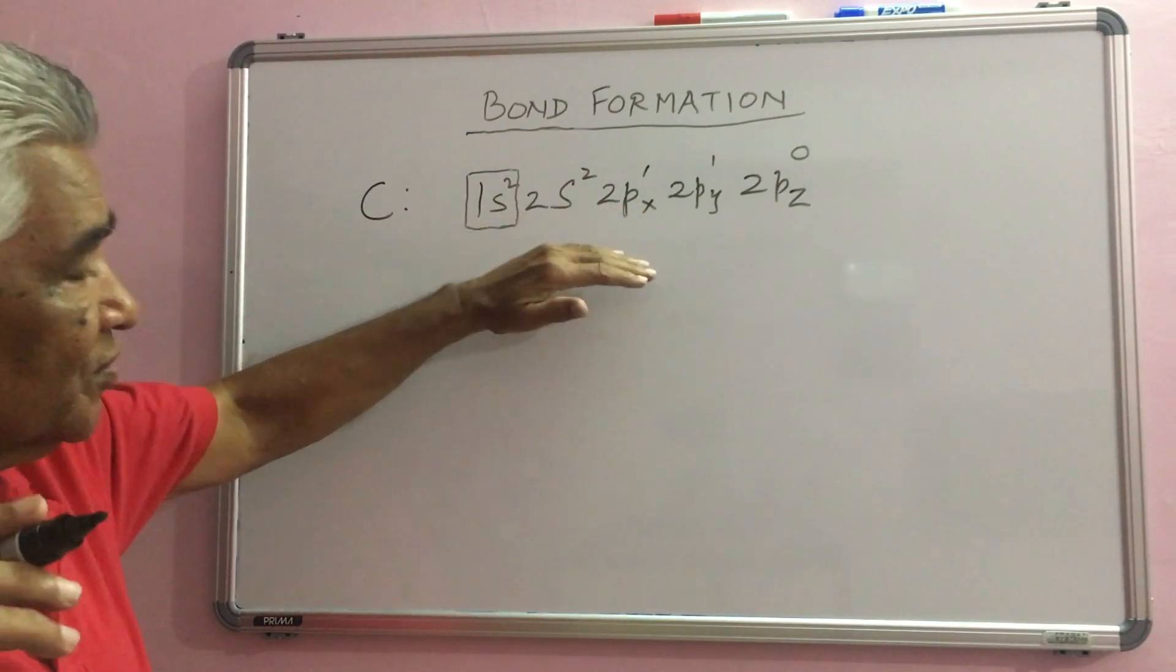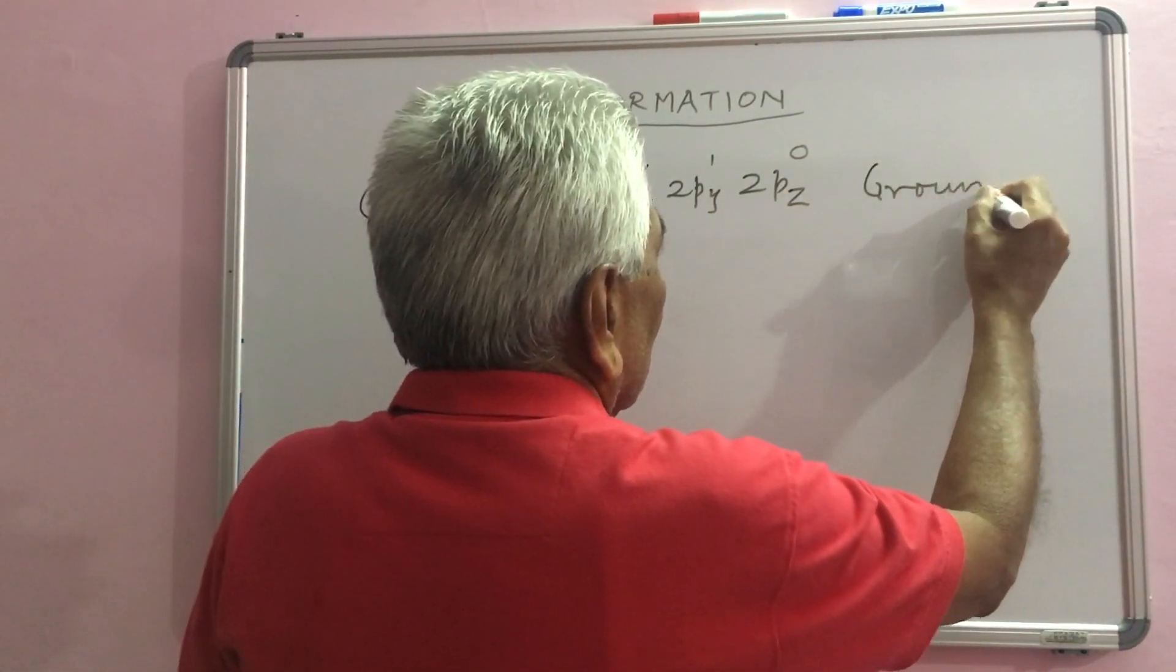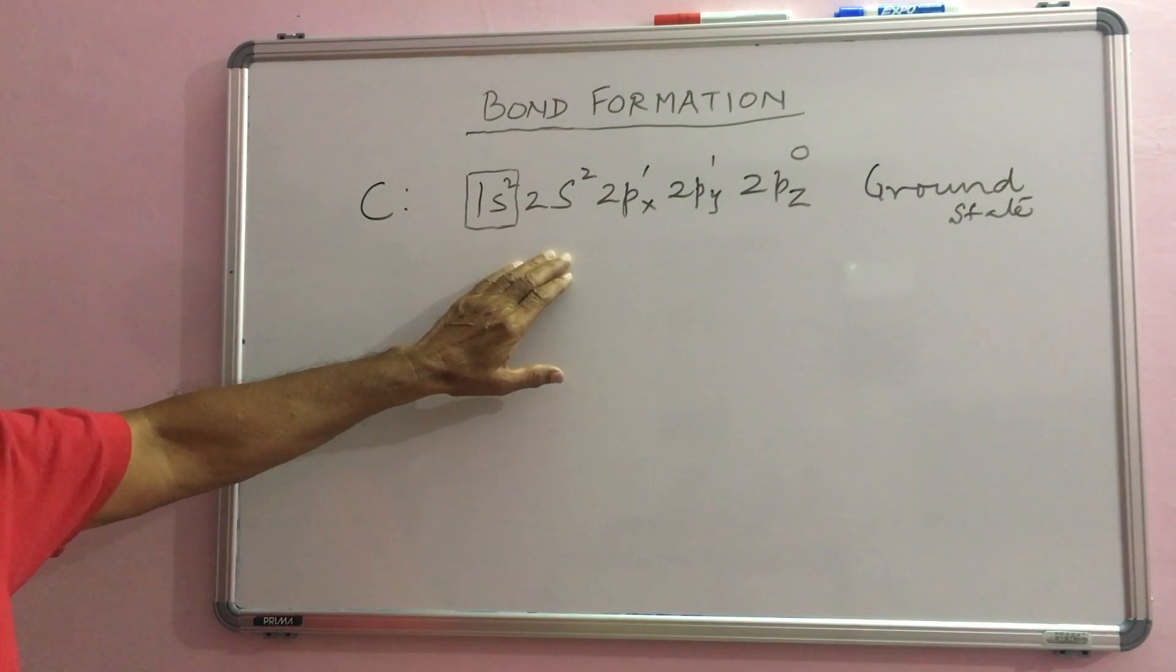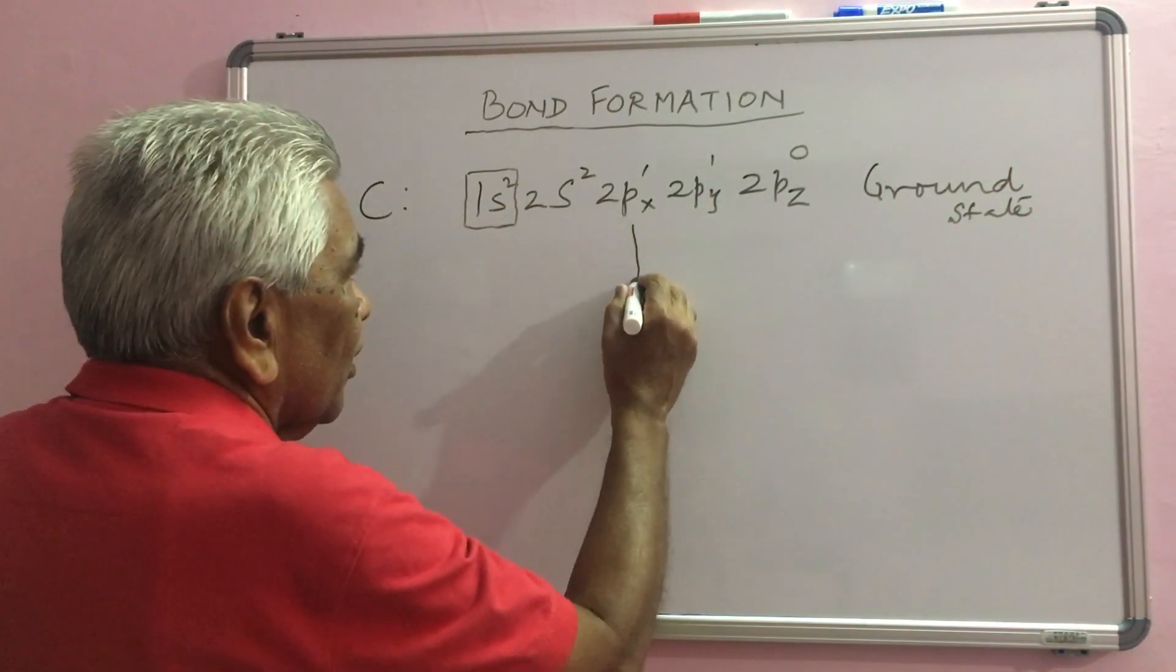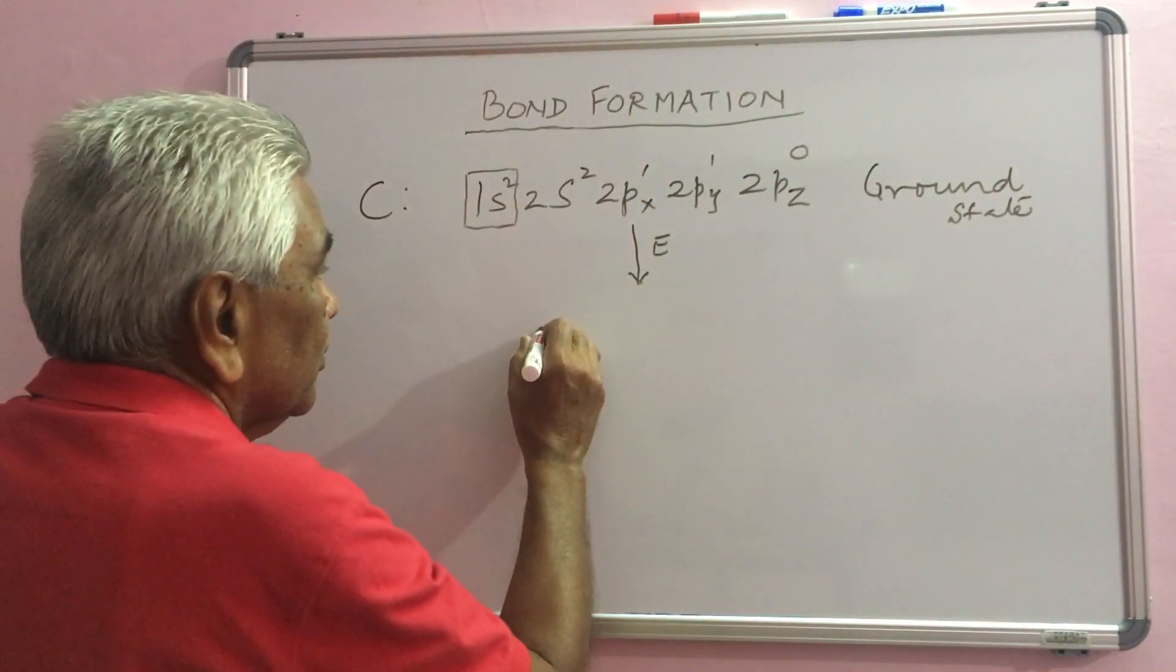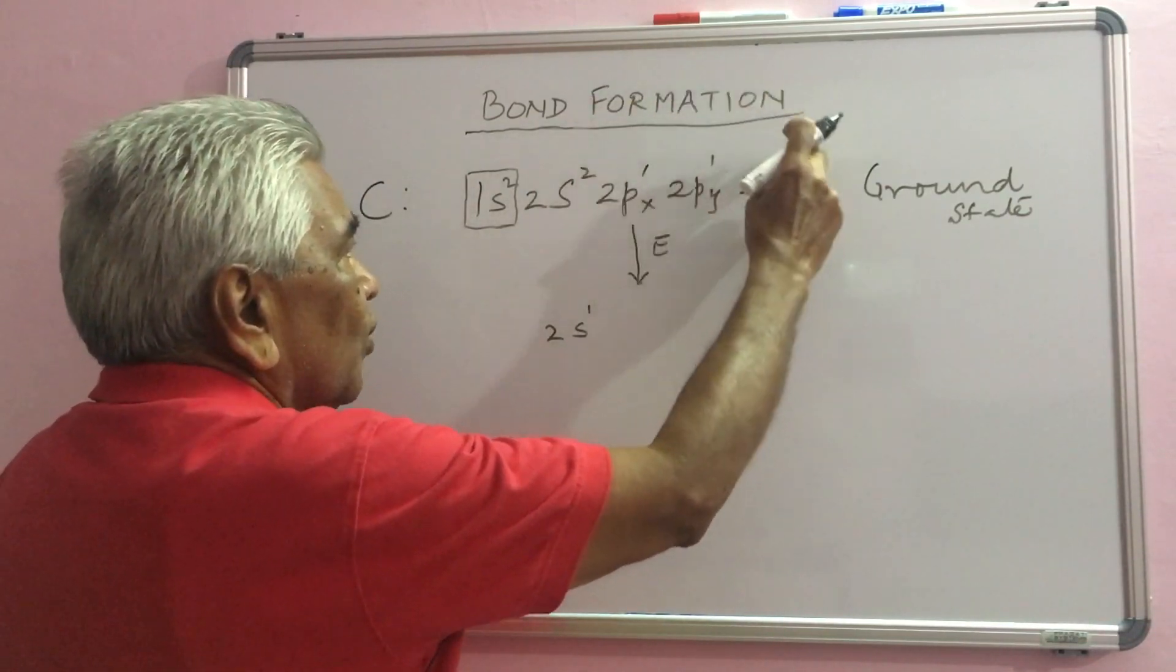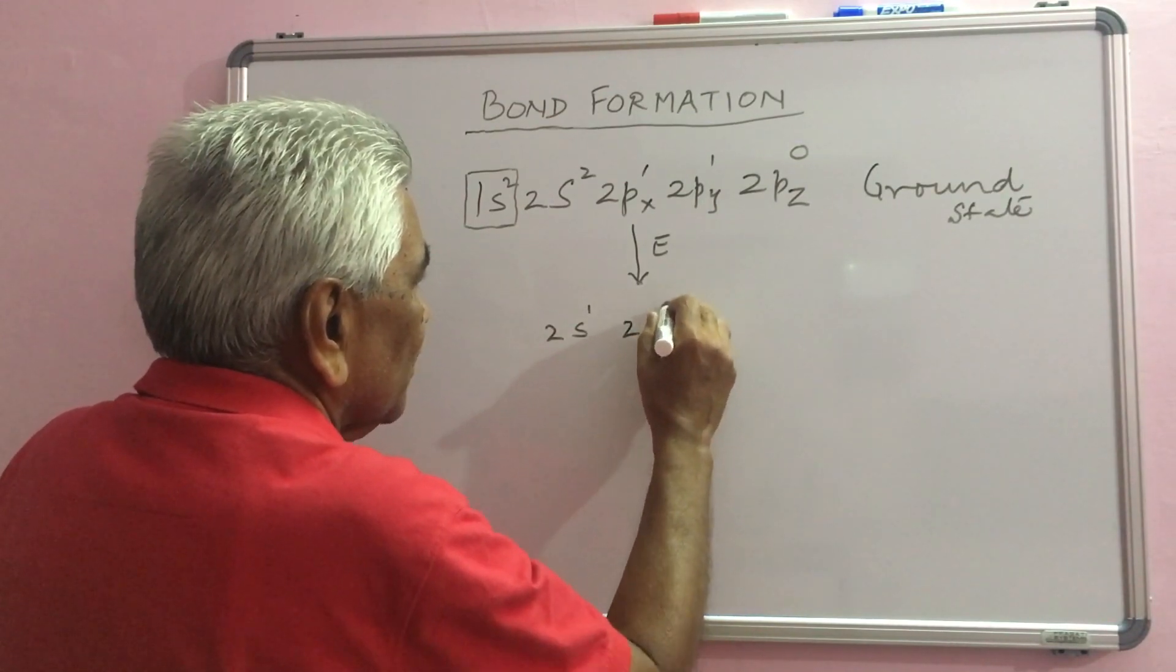Carbon in this state which is ground state does not form bonds. Whenever it has to form bond, this will require some energy and this is the same energy level. So, this has an option to occupy this vacant orbital and this occupies it.